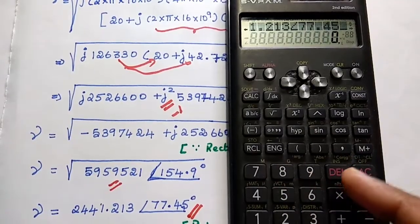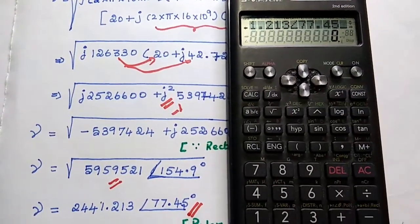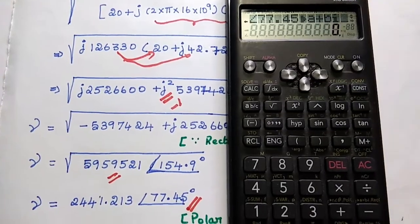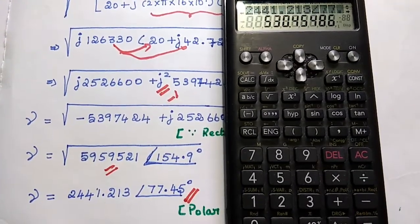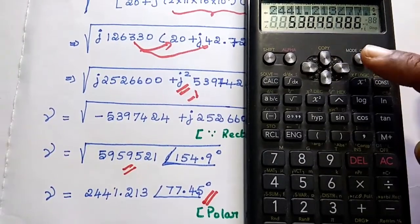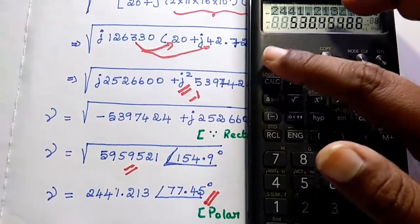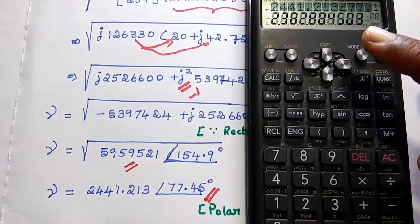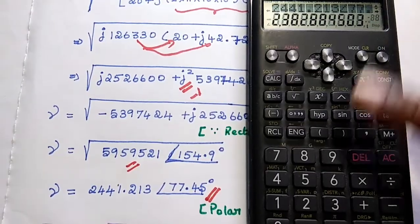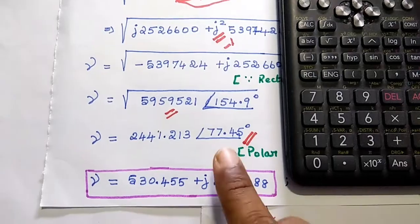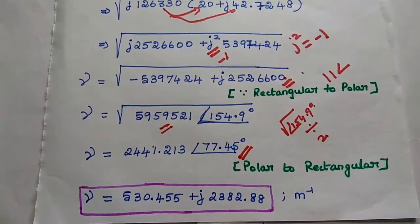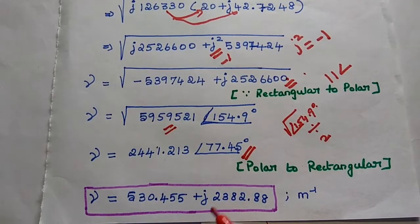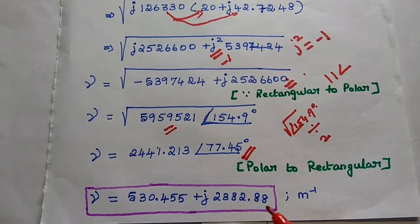To convert this polar form into rectangular, select shift and then minus sign — that converts polar into A plus BI, that is rectangular form. Then press equal. You can get the real term as 530.455. For getting the imaginary value, press shift and then equal. You can get the imaginary term as 2382.88.